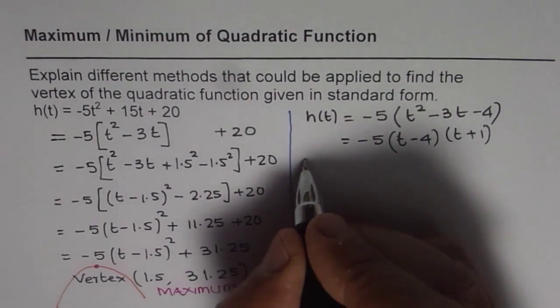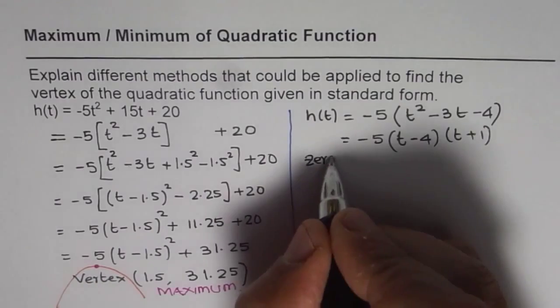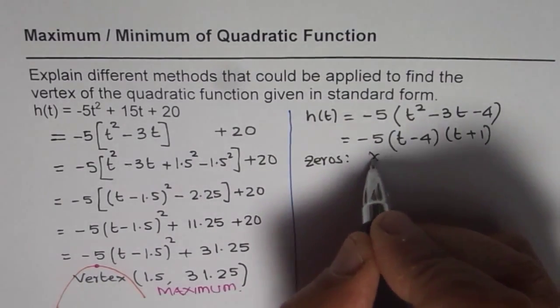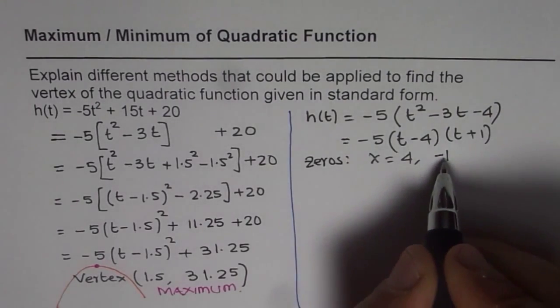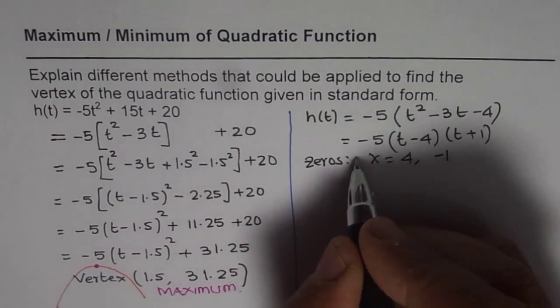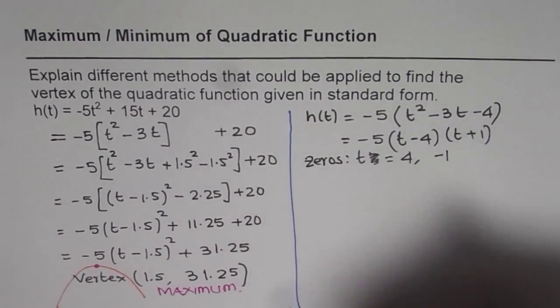Now the zeros are at, or the x intercepts you can say, t = 4 and t = -1. Average of these two values gives us axis of symmetry.